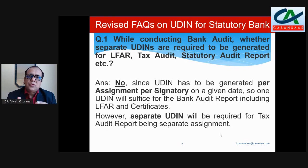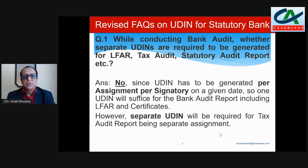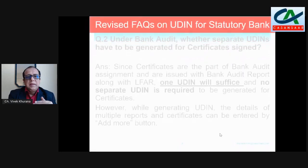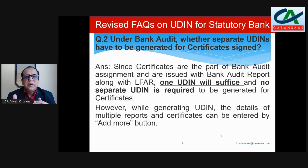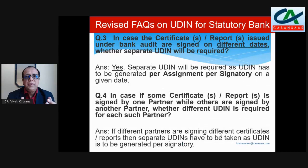Regarding IFC — Internal Financial Controls — that is also part of the audit report. For that you can give the same UDIN; you can mention this UDIN on the audit report, LAFAR, and certificates. Regarding bank code, no separate UDIN needs to be generated for certificates. Only one UDIN per branch for certificates or LAFAR is required, and you can add more entries using 'add more'.